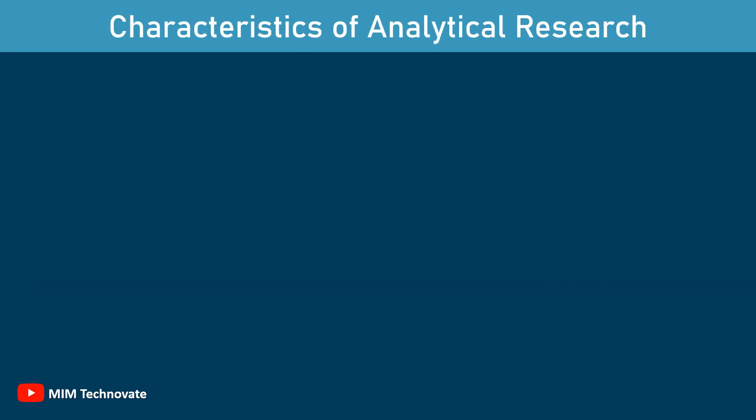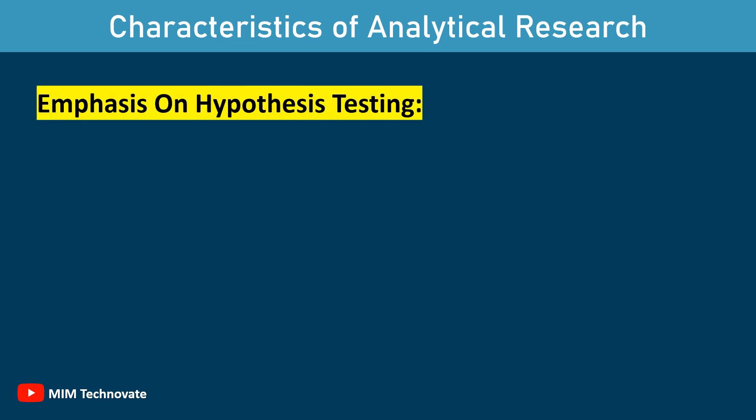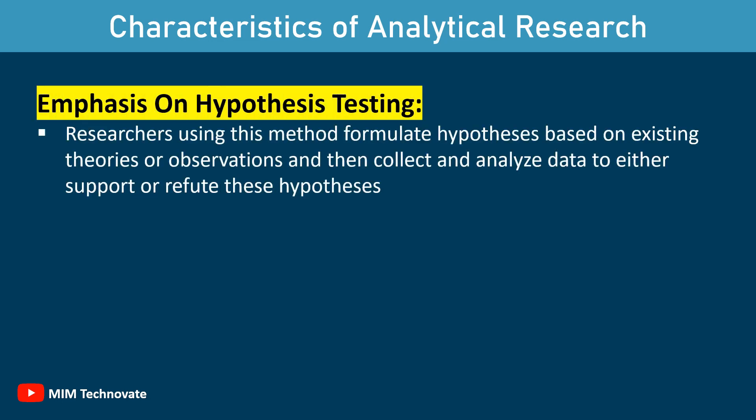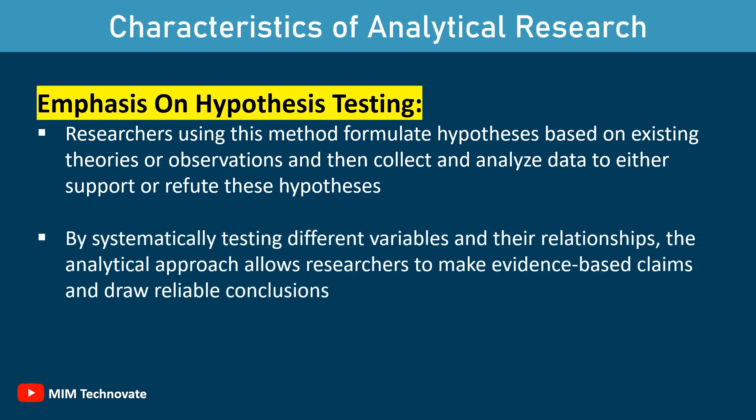Characteristics of Analytical Research. One of the key characteristics of analytical research is its emphasis on hypothesis testing. Researchers using this method formulate hypotheses based on existing theories or observations, and then collect and analyze data to either support or refute these hypotheses. By systematically testing different variables and their relationships, analytical research allows researchers to make evidence-based claims and draw reliable conclusions.